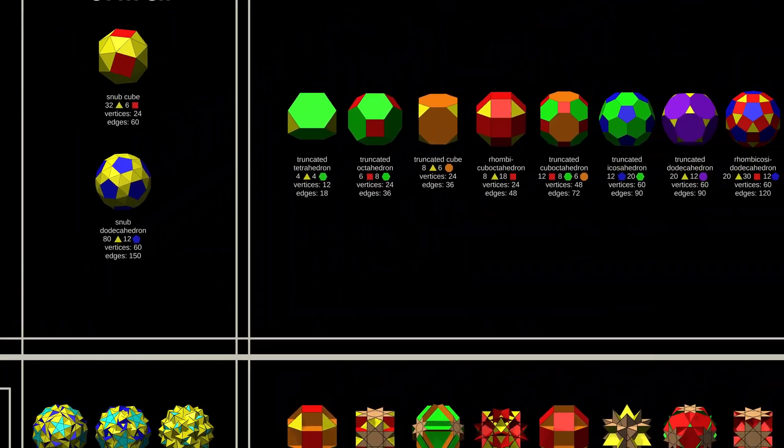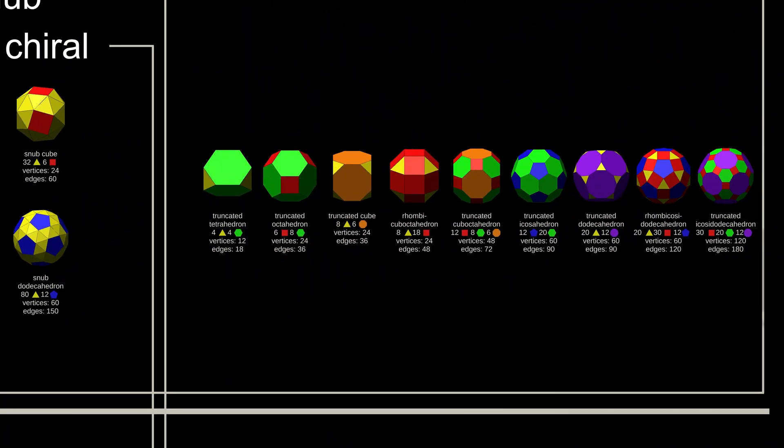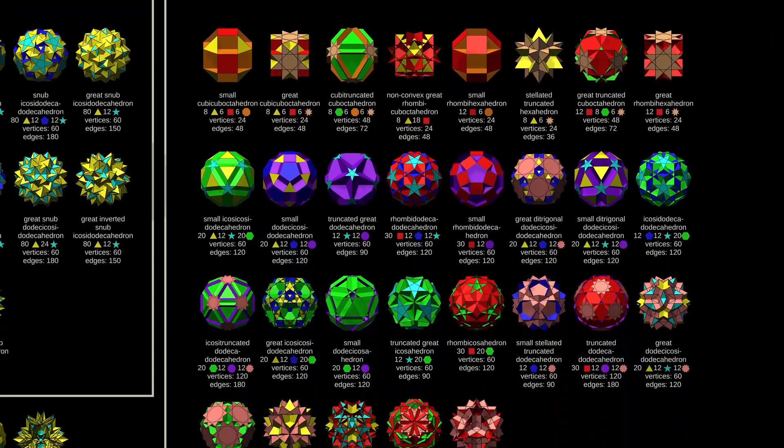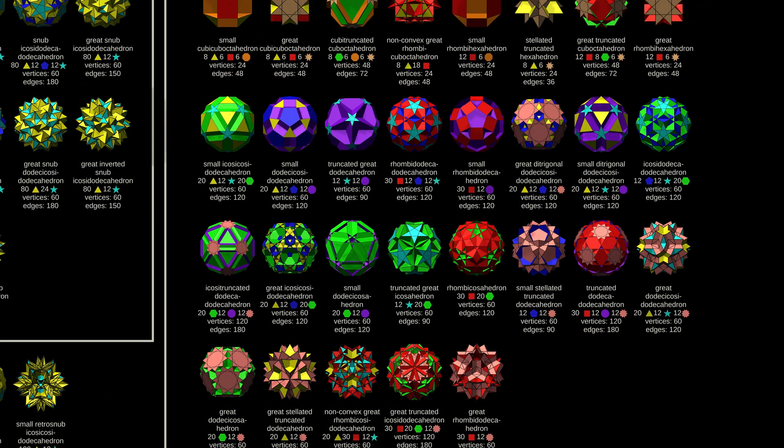There are nine Archimedean solids that don't fit into any particular subcategory, and no less than 29 non-convex polyhedra outside the subcategories.